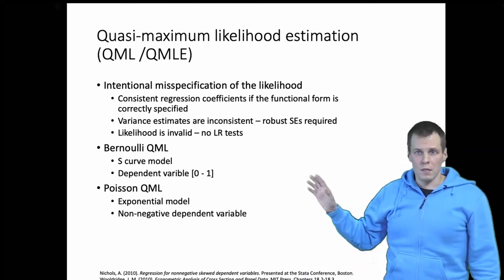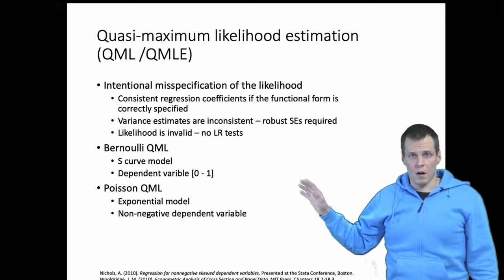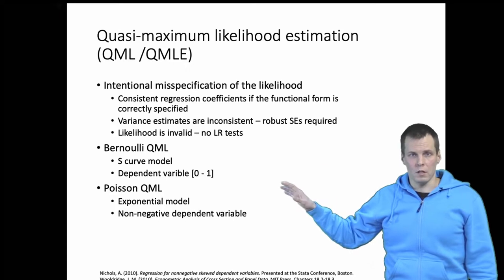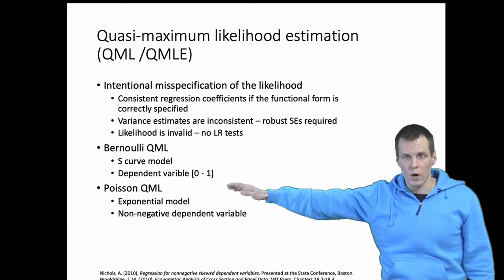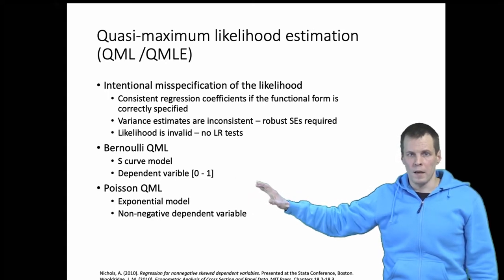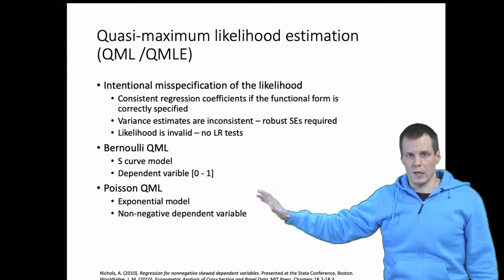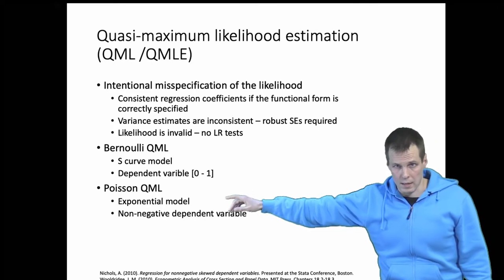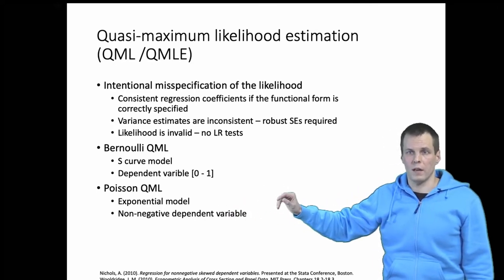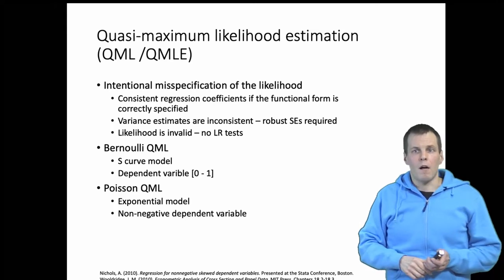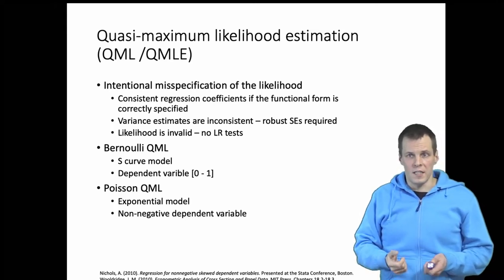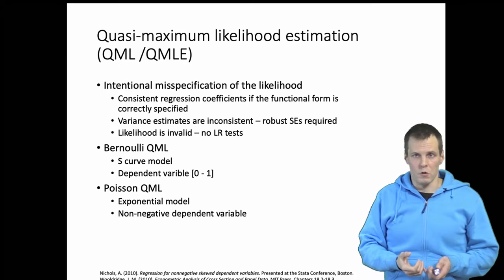The features of quasi-maximum likelihood estimation are that certain important estimators like Bernoulli quasi-maximum likelihood which is for a dependent variable between zero and one and Poisson quasi-maximum likelihood estimation which has an exponential model for the predicted value of the dependent variable are consistent generally regardless of the distribution of the dependent variable.